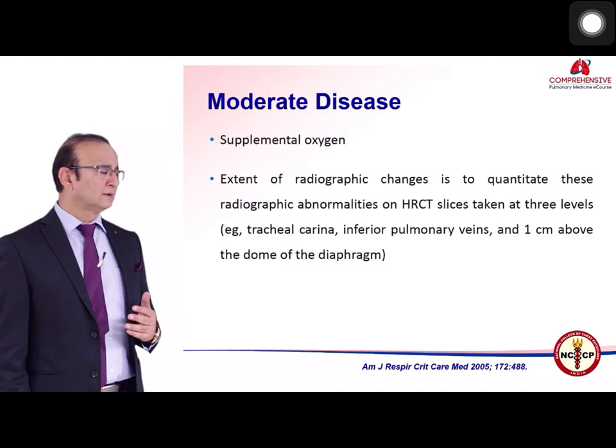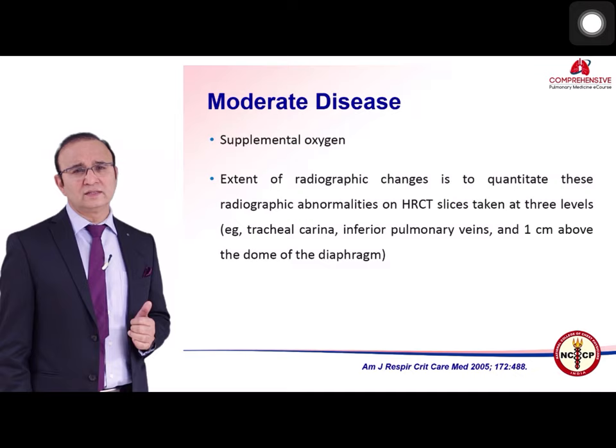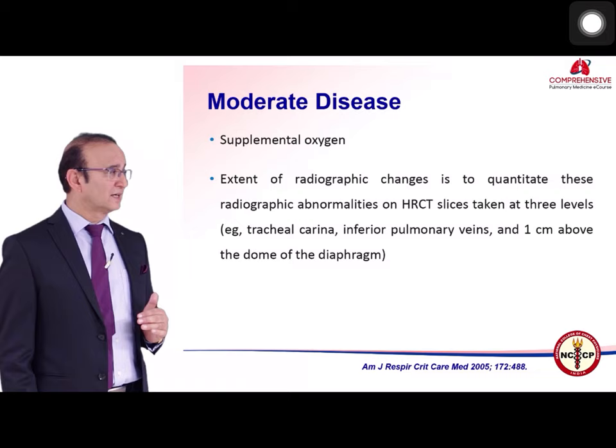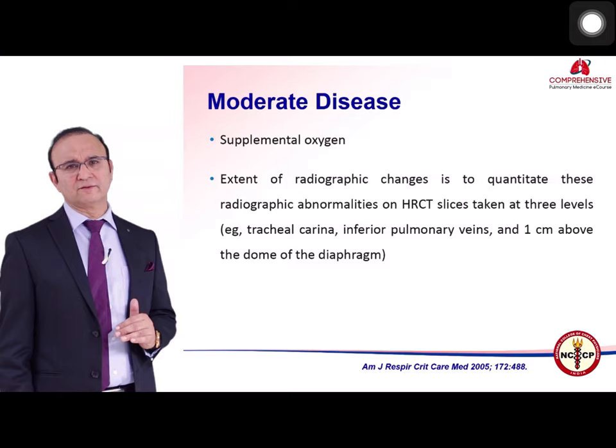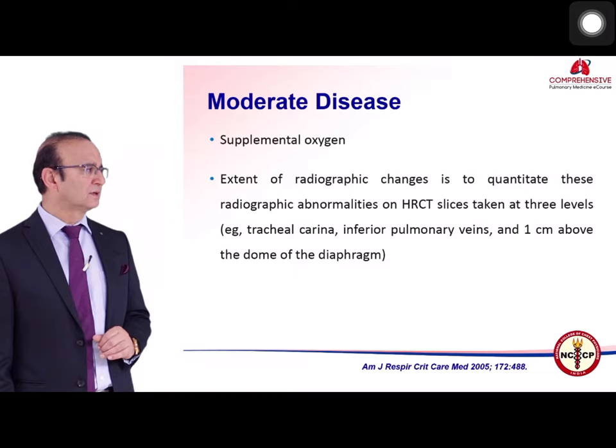One way to quantify radiographic changes is to assess HRCT slides at three levels: the tracheal carina, the inferior pulmonary vein, and one centimeter above the dome of the diaphragm. These three reference points are used to quantify parenchymal changes on HRCT.